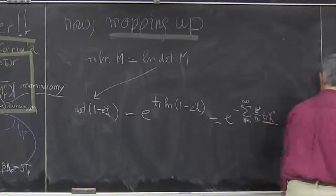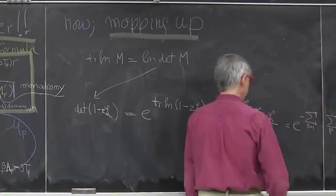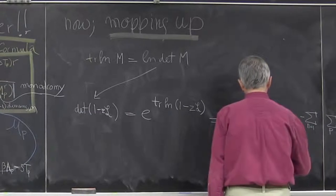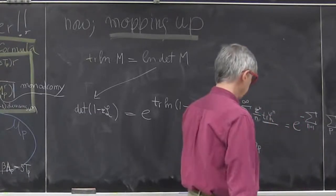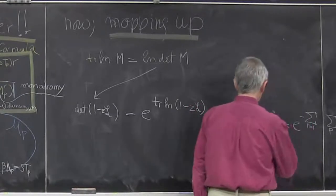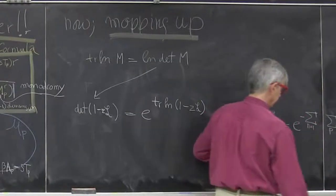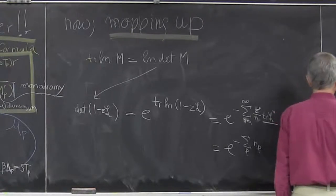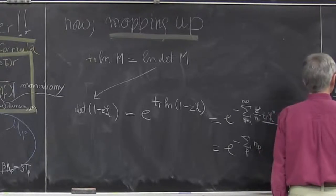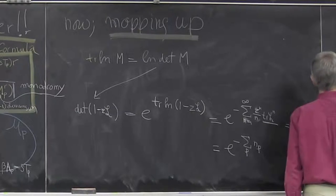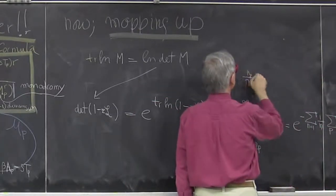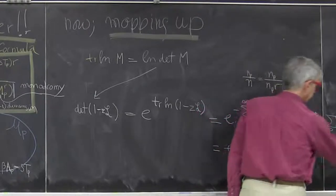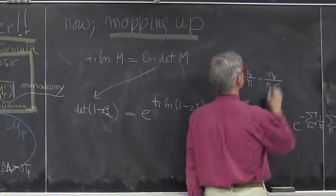But we have this sum over n's, it gets rid of the delta function, so this becomes e to the minus sum over p, np. And then, divided by n. So there was an n here. So np divided by n equals, because of this Kronecker delta function, np divided by n is np divided by np times r, because we only allowed repeats of a shorter cycle, so this cancels.